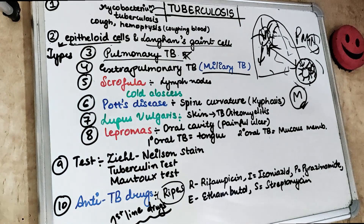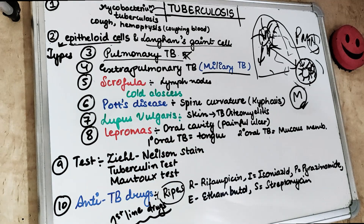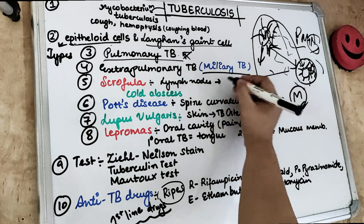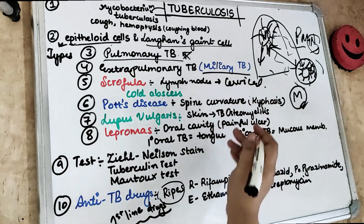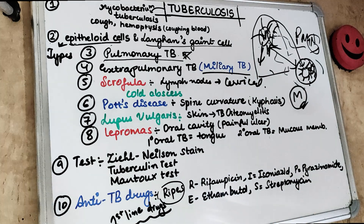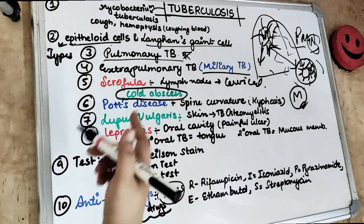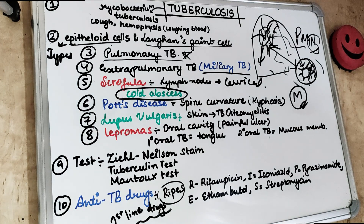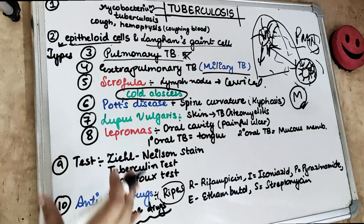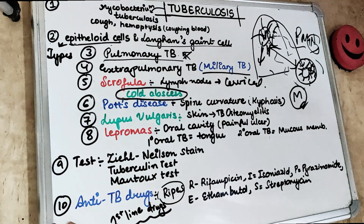Scrofula is when the TB infection affects the lymph nodes, causing them to be enlarged, rubbery, and matted in appearance. The lymph nodes involved include submaxillary, submandibular, and cervical lymph nodes. If left untreated, an abscess can develop in the lymph node — called a cold abscess — with pain, swelling, pus discharge, and sinuses.